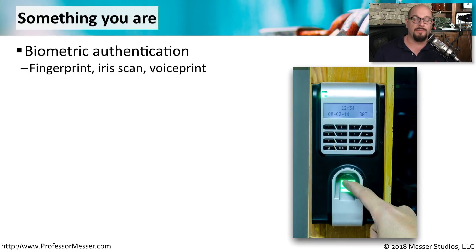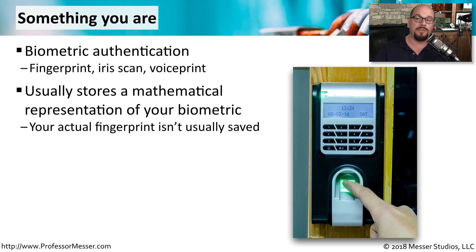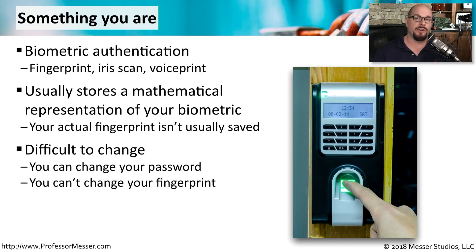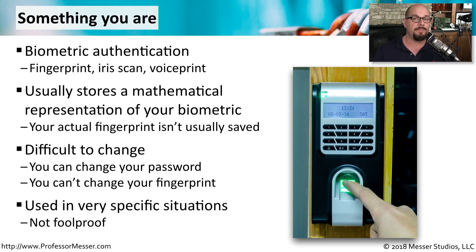The authentication factor of something you are refers to part of you as a person — biometric authentication such as a fingerprint or iris scan. The biometric system typically does not save your actual fingerprint, but instead creates a mathematical representation stored for later use. These biometric values are very difficult to change and very unique. Because biometrics is not an exact science, combining it with other types of authentication makes the process much more secure.